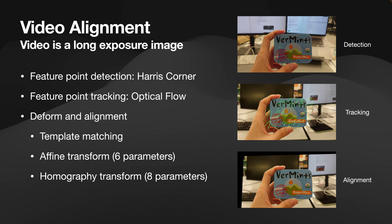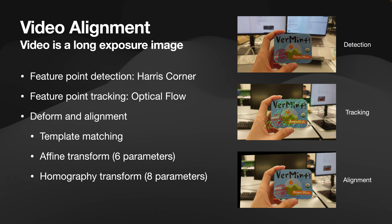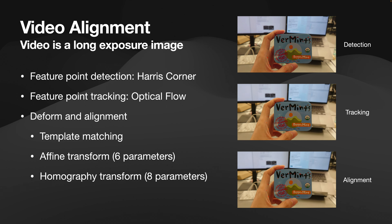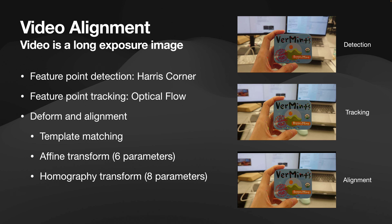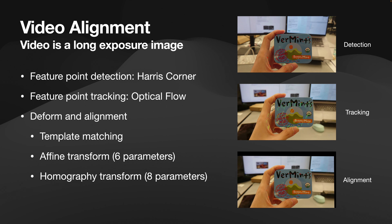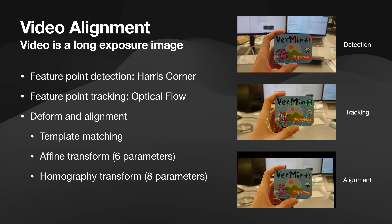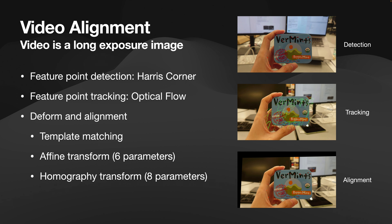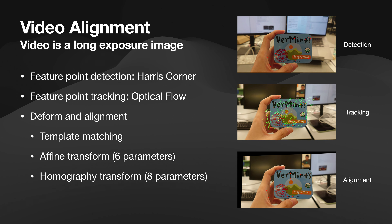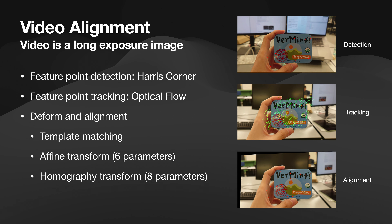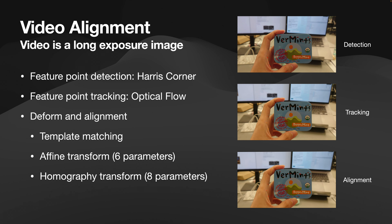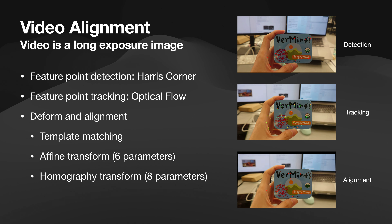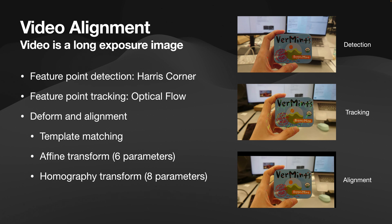There are three main points. I use Harris corner for feature point detection, optical flow for feature point tracking, and I also test three deform and alignment methods.